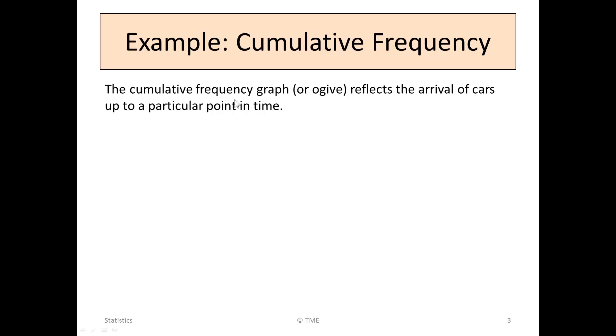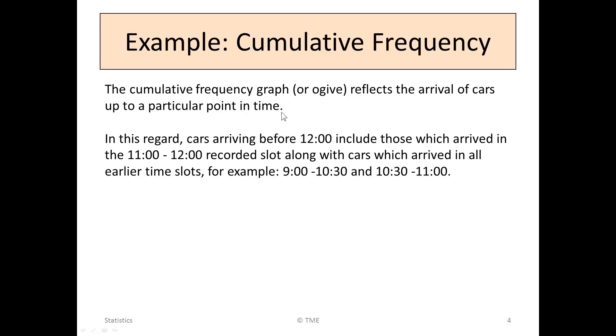The cumulative frequency graph, or ogive, reflects the arrivals of cars up to a particular point in time. For example, if we consider the cars that arrived before 12 o'clock, this would include the cars that arrived between 11 and 12, but all of the other slots as well. The earlier slot of 9 to 10:30 and the one from 10:30 to 11, all cars that arrived in those three slots arrived before 12. So we'd count them all.